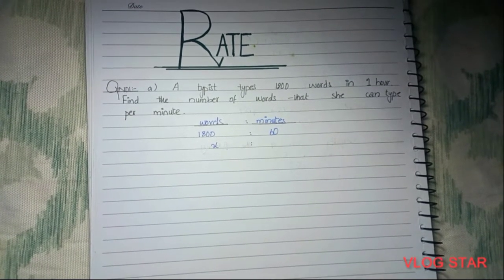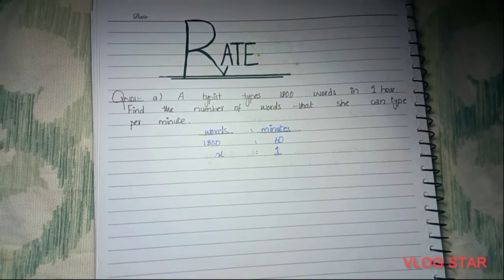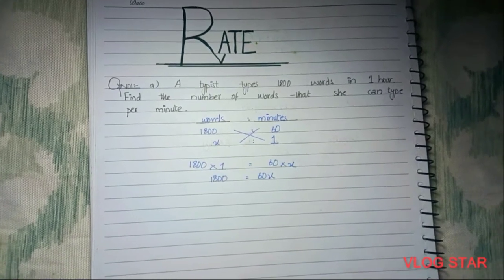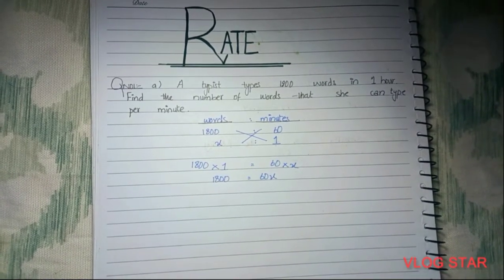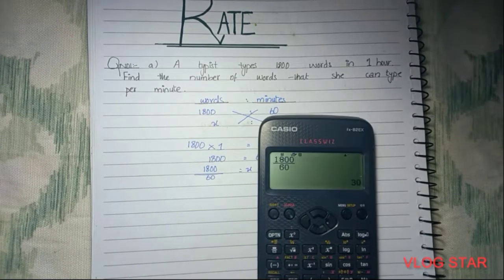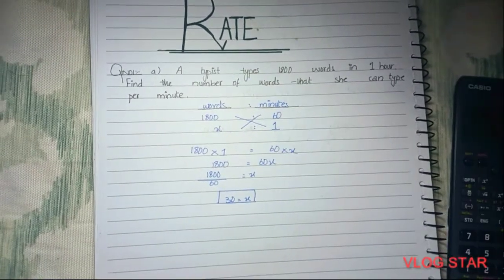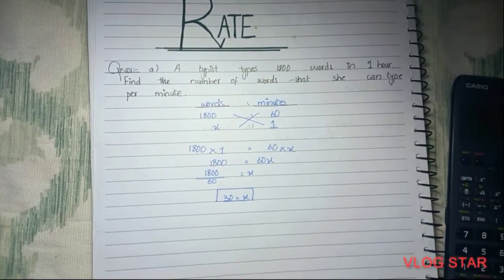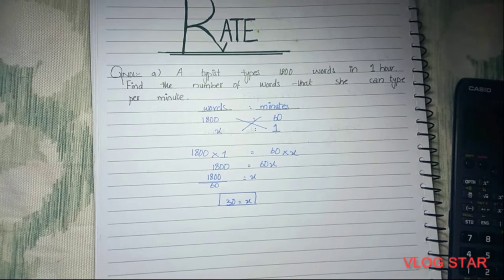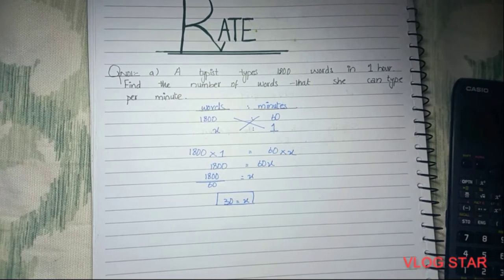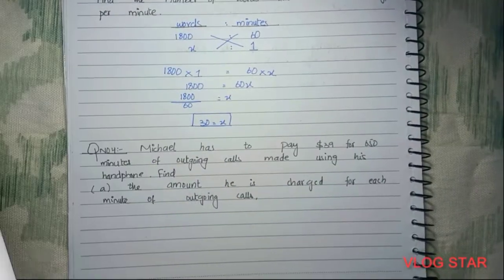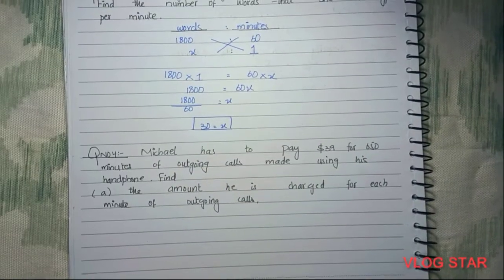Now we cross multiply. This gives us x equals 30. This means the typist types 30 words per minute. Moving on to question number four.